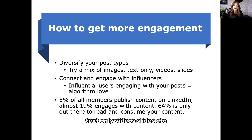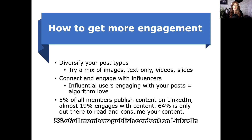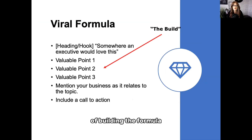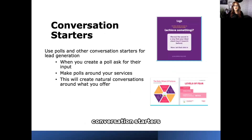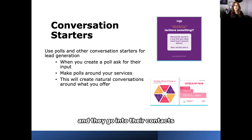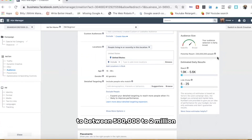Connect and engage with influencers — when influential users engage with your post, the algorithm loves that. 5% of all LinkedIn members publish content, almost 19% engages with content, and 64% are only there to read and consume. When building the formula, start with a hook — something like 'An executive would love this' creates curiosity and helps you find your ideal clients. Use conversation starters: people use polls for lead generation — they'll post a poll, take the link, go into their contacts, send multiple messages, and can add other countries as well. The goal is to get reach between 500,000 to 2 million.